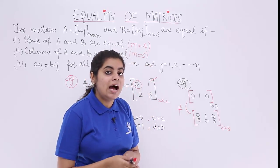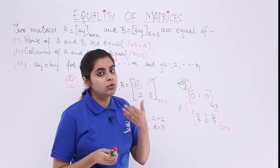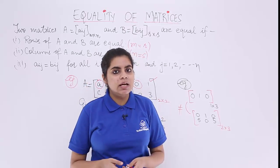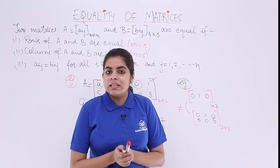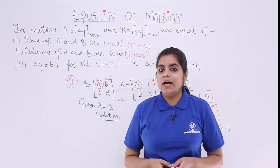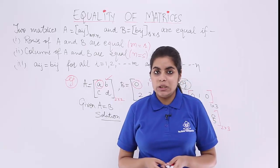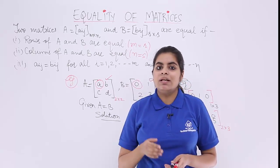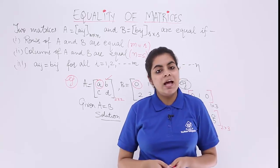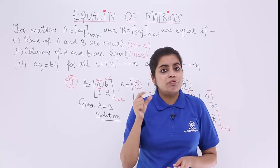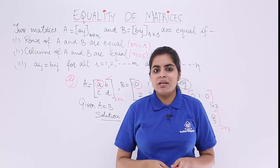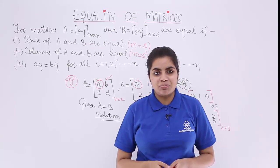Similarly, had the question been one where the rows were equal but the columns were not, or the columns are equal but the rows are not, the matrices are not equal. So from this topic we come to know that two matrices are only equal when the rows are equal, the columns are equal — that means the order is equal — and every element of the first matrix should be equal to every element of the second matrix at their respective positions.